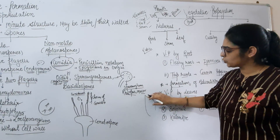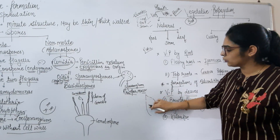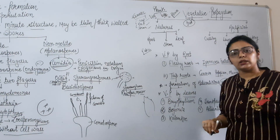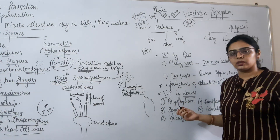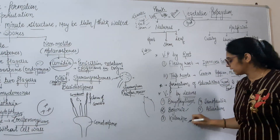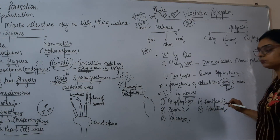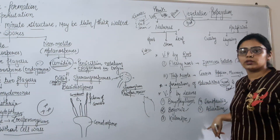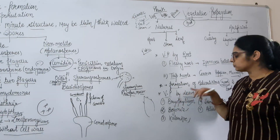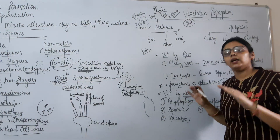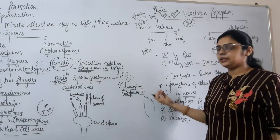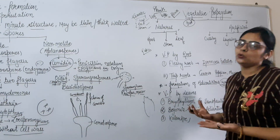In vegetative propagation by leaves, leaves have notches on them, and on these notches adventitious buds form. These buds detach from the parent body, and after detaching they form new plants. Examples include Bryophyllum (the 'pathar chatt' plant), Begonia, Kalanchoe, Cissus, and Adiantum — also known as the walking fern. So in leaves, adventitious buds form on the leaf, detach from the parent body, and form a new plant.